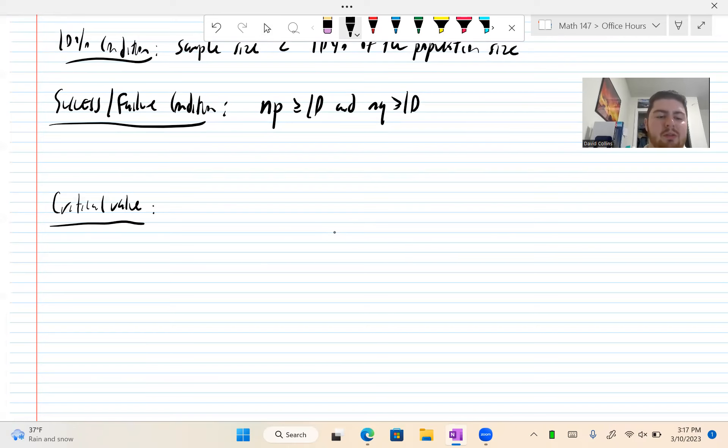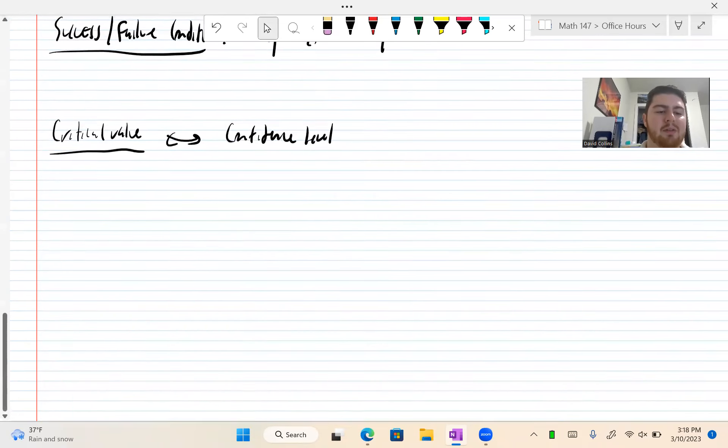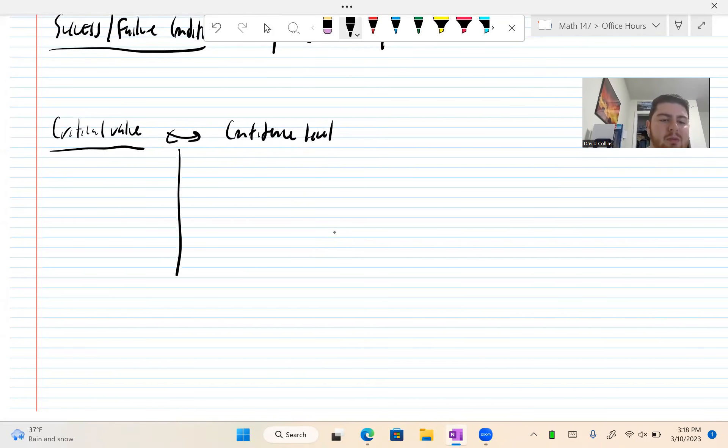The next thing we're going to talk about is called a critical value. Now this corresponds to what's called our confidence level. Confidence level is a percentage. We're going to say something like we want a 95% confidence interval, so our confidence level would be 95%. There are a few common confidence levels. We're just going to talk about Z scores. We'll call them Z critical, which are written like Z and a little asterisk.